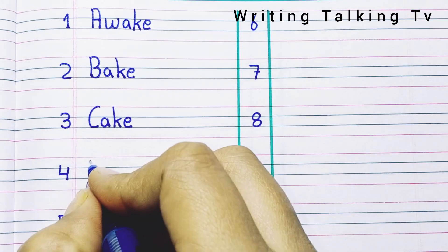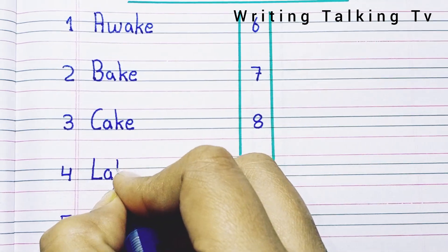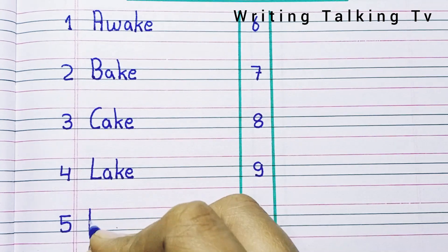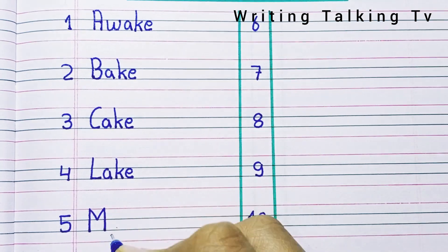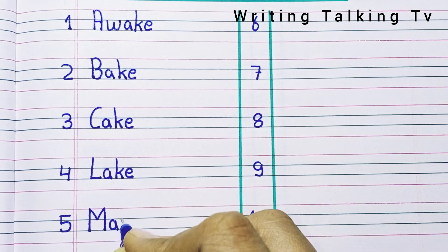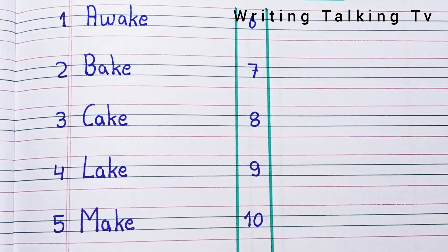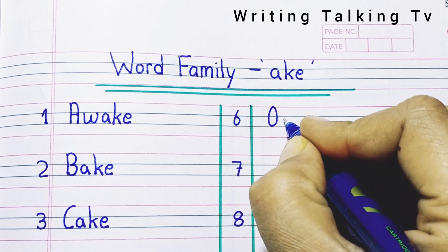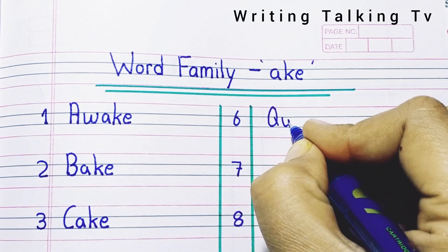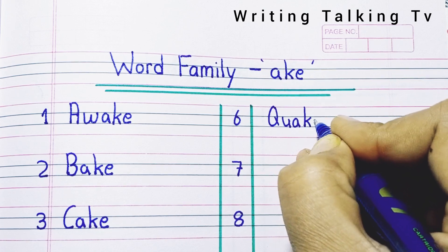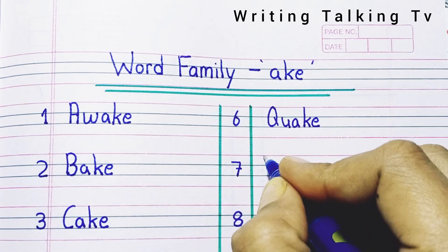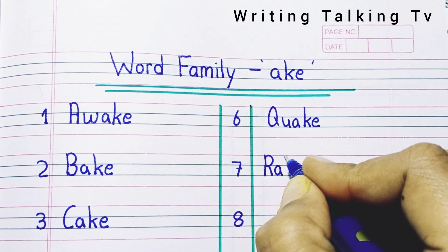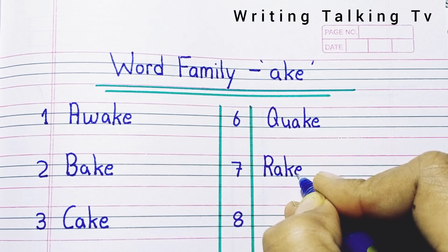Fourth number L-A-K-E, Lake. Fifth number M-A-K-E, Make. Sixth number Q-U-A-K-E, Quake. Seventh number R-A-K-E, Rake.